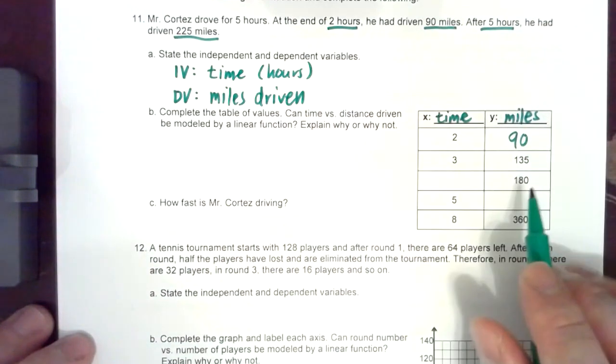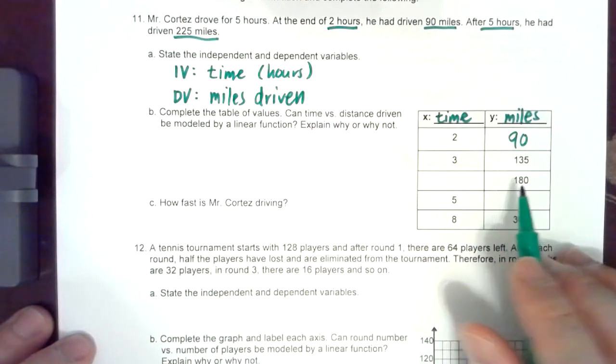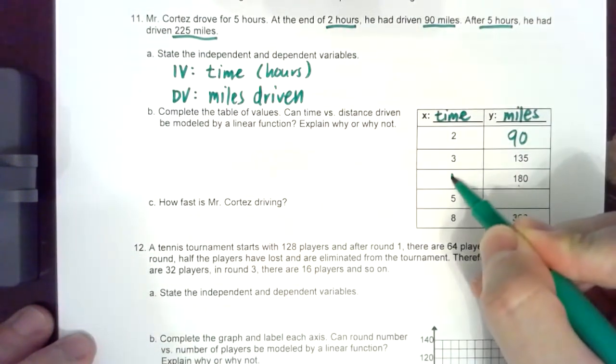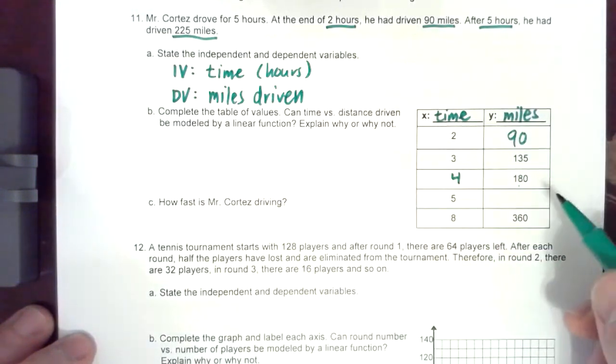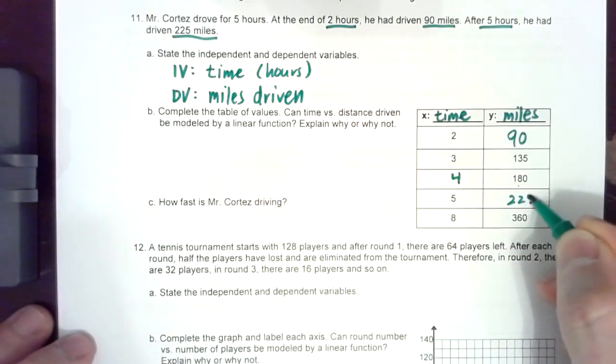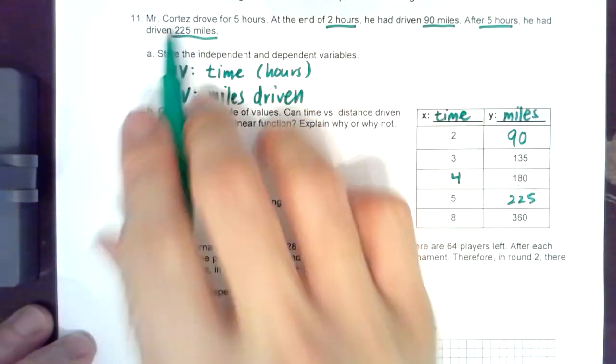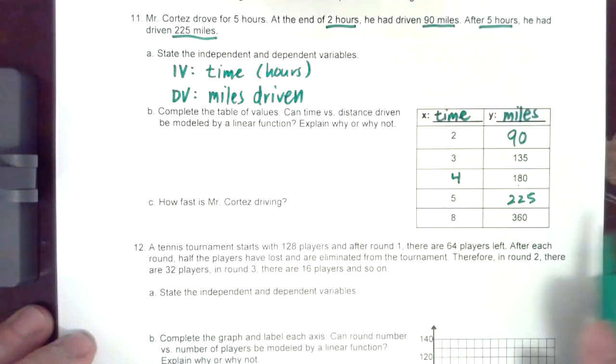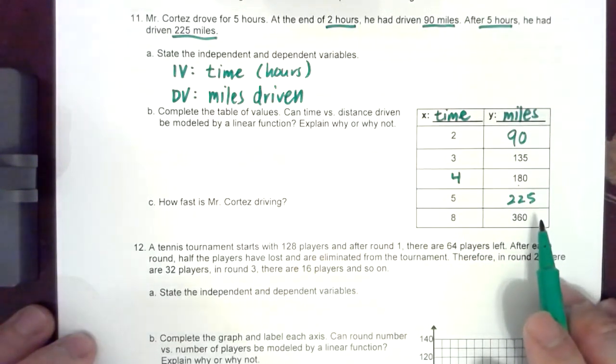3 is 135. Well if this is linear, this would be 4 for 180 because 2 is already 90. 5 would be 225 as stated in the context and 8 would be a combination of 4 and another 4 which is 360.